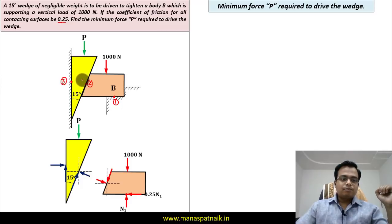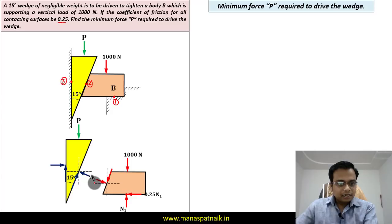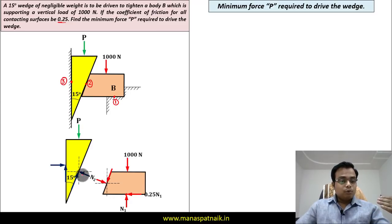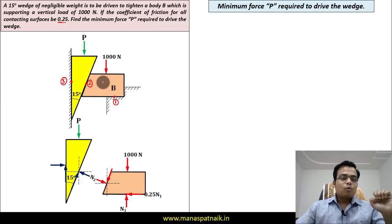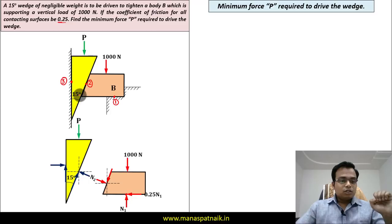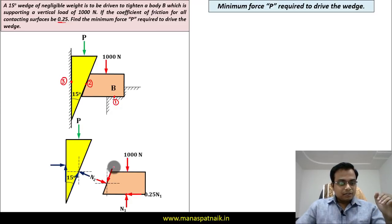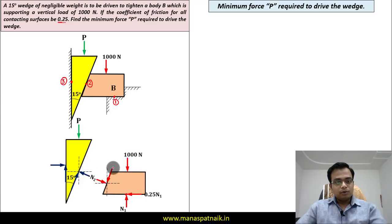This block B is in contact with this wedge, so the wedge is going to offer a normal to block B, represented as N2 since this is point of contact two. If this is the action N2 onto the 1000 Newton block, there is going to be a reaction N2 in the opposite direction — the blue colored arrow — from the 1000 Newton block onto the wedge. There is also going to be a friction force: the wedge tries to move downward, so the 1000 Newton block offers friction in the upward direction. By action-reaction, the friction force is mu N2 at both sides. Similarly, N3 is normal to the wall surface, and since the wedge is trying to move downward, friction acts upward: 0.25 N3.